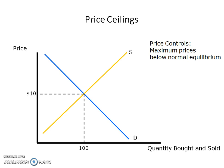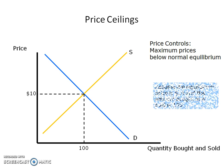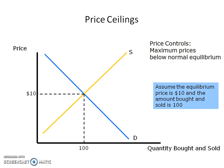So something may have happened. The government may decide that $10 is just too much for most people to afford, and so they're going to step in and set a maximum price of $6. As a result of this maximum price of $6, we can see that we can no longer reach equilibrium here.